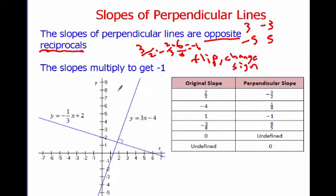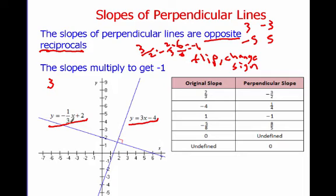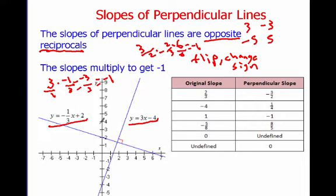For example, looking at this graph, I have y equals 3x minus 4 and y equals negative 1 third x plus 2. The lines are perpendicular as shown by the right angle. We can test it by taking the slope 3 and multiplying by negative 1 third. Well, 3 is 3 over 1, so 3 times negative 1 is negative 3, and 1 times 3 is 3 — a negative divided by a positive gives us negative 1. So they are in fact perpendicular.